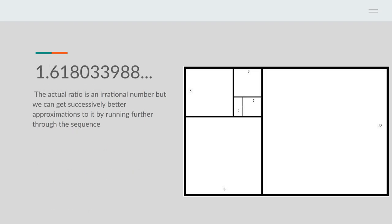As you draw this sequence of squares, the rectangles so formed converge on the golden ratio, which the first few digits is 1.6180 and it goes on. The actual ratio is an irrational number. But we can get arbitrarily better approximations of it by running further through the Fibonacci sequence. We can approximate this irrational number by taking successive members of the Fibonacci series and taking the ratio of the last two terms, and that gives us successive approximations.